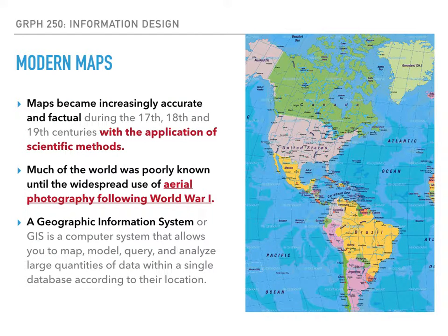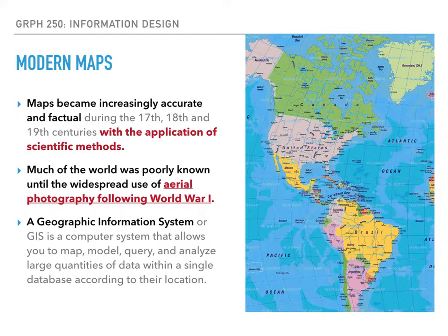Modern maps became more accurate and factual because scientific methods were starting to be used during the 17th century, so proportion was getting more accurate. Also, during World War I, aerial photography started being used. Until the widespread use of aerial photography, it was still hard to actually measure things accurately. When you can get far up in the sky, you're able to get a much better sense of where things are in proportion to others. This is also when GIS — geographic information systems — started being discussed. We even have a program for that at our school, looking at mapping systems and their relationship to computers and other technologies.